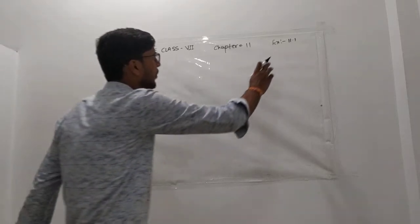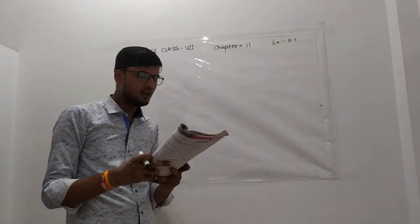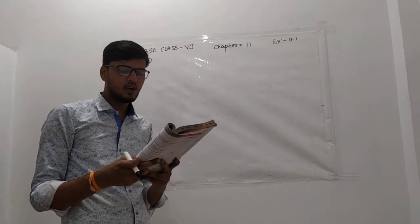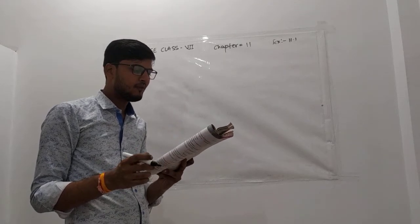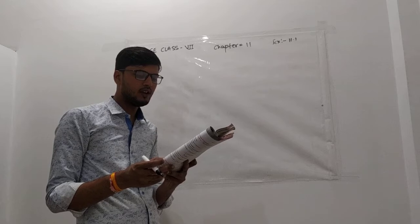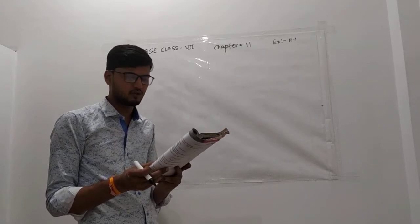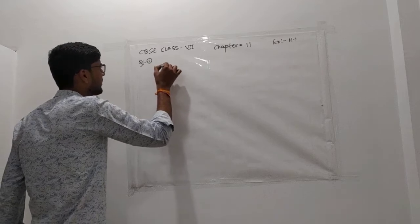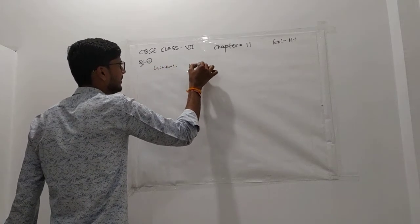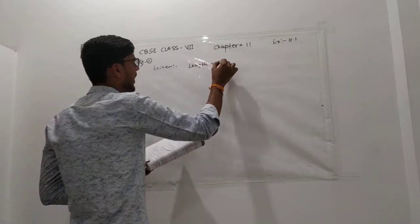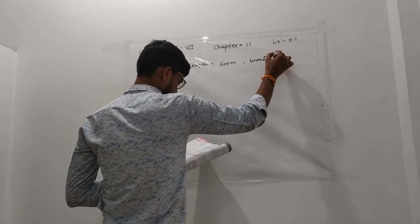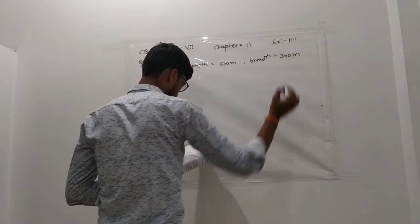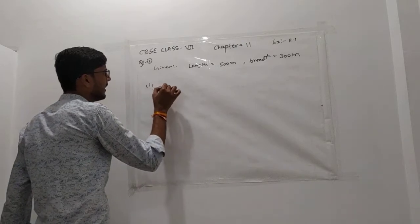Hello my dear students, now I start exercise 11.1. Question number one: a rectangular piece of land has length 500 meters and breadth 300 meters. First, find its area. Second, find the cost of the land if one meter square costs 10,000 rupees. Given: length equals 500 meters and breadth equals 300 meters.